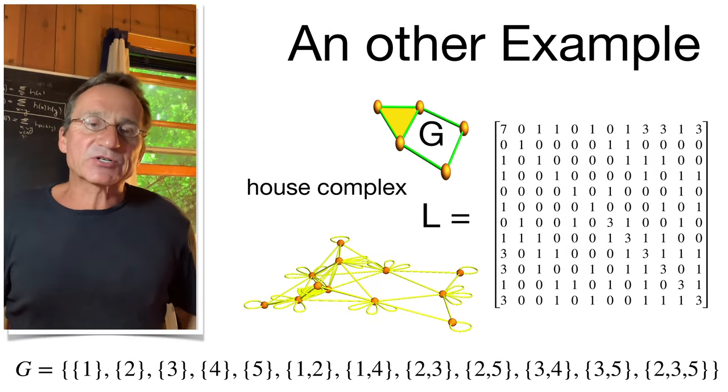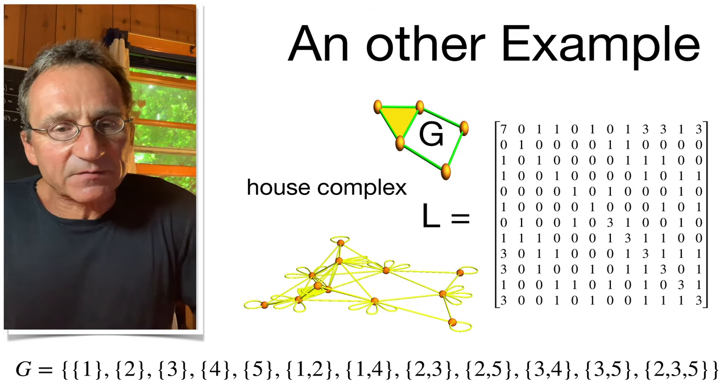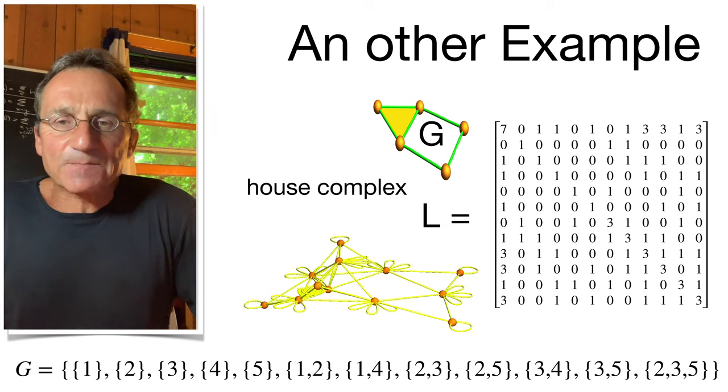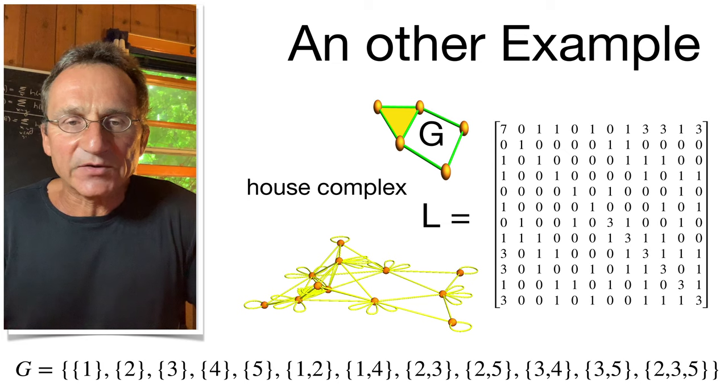Here's another example, a larger example, where we have the Whitney complex of a house graph. So we have 12 sets, and it has produced this bilinear form in SL 12 Z.